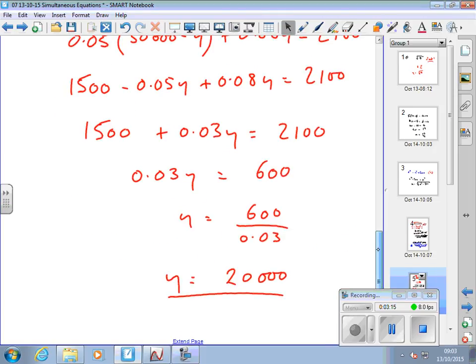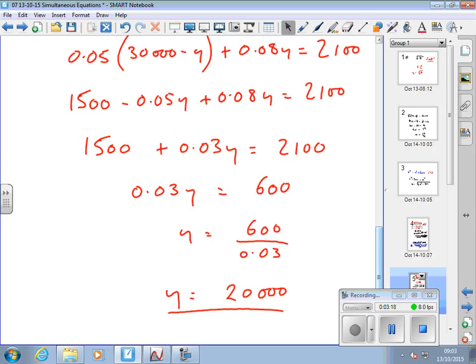So hopefully you've got this. Expand out the brackets, collect together the Ys, subtract 1500 from both sides, divide by 0.03 and you've got Y equals 20,000.